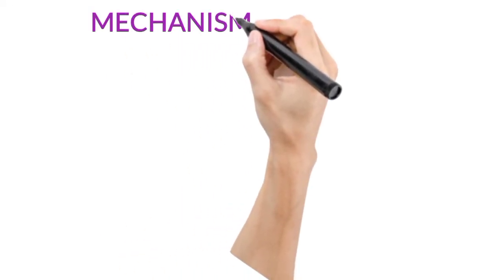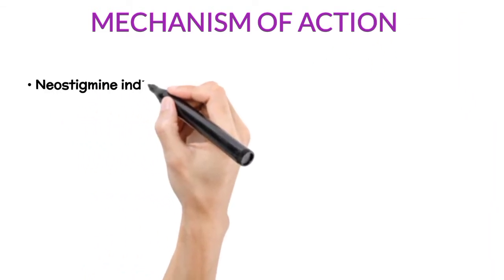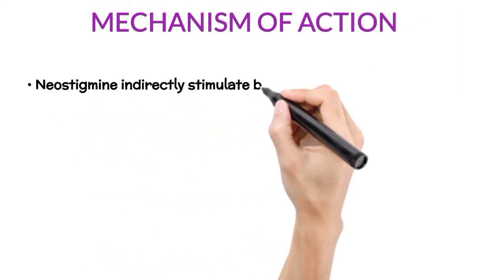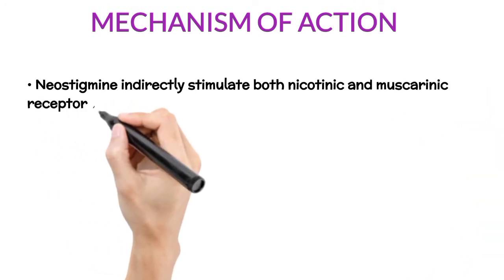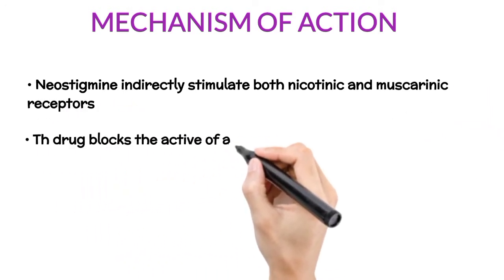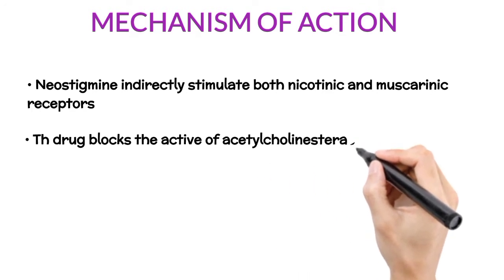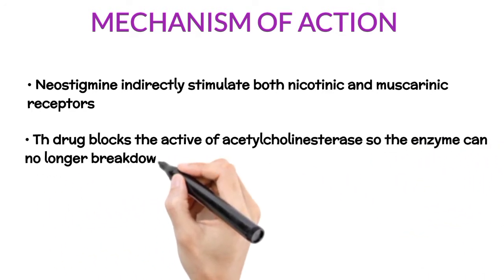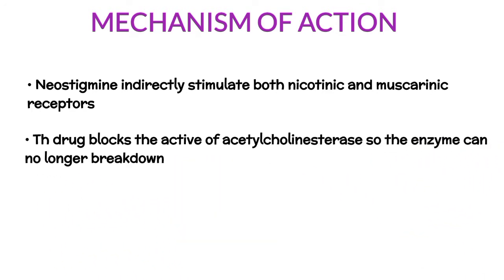Mechanism of Action: By interfering with the breakdown of acetylcholine, neostigmine indirectly stimulates both nicotinic and muscarinic receptors. The drug blocks the activity of acetylcholinesterase, so the enzyme can no longer break down acetylcholine molecules before they reach the postsynaptic membrane receptors.